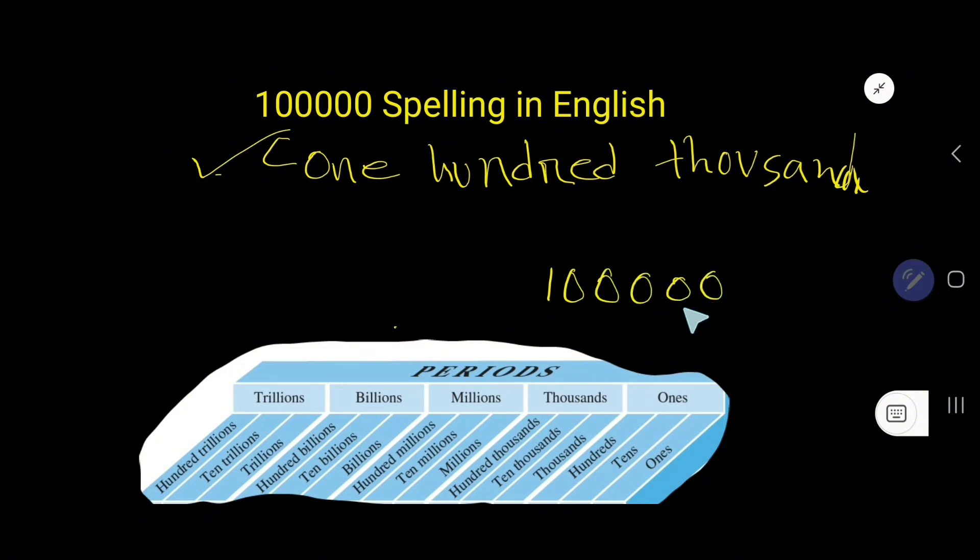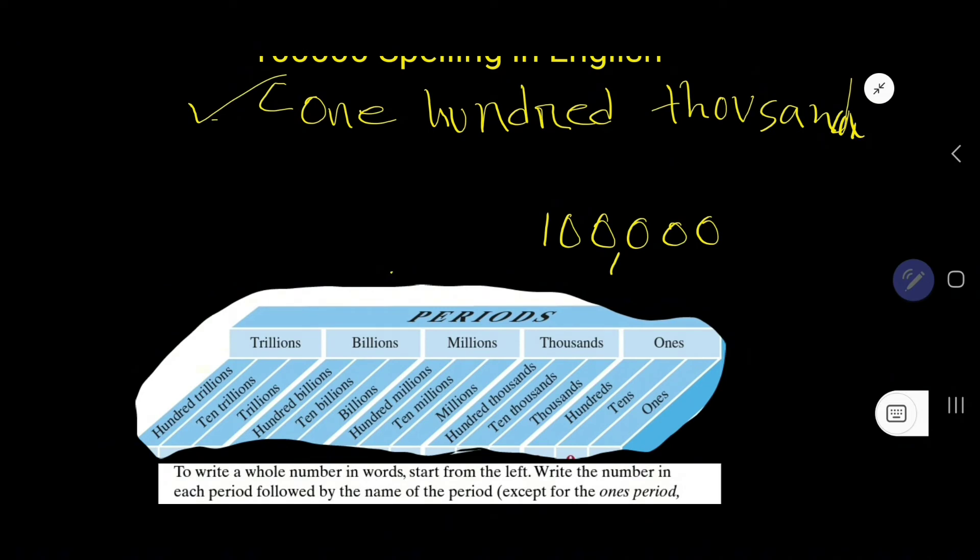You have to group 3 digits at a time. So look, now look at this chart. These three zeros are in ones period, right? And this 3-digit is in thousands period.